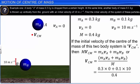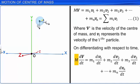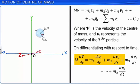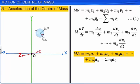On differentiating equation 1 with respect to time, M·(dV/dt) = M1·(dV1/dt) + M2·(dV2/dt) + M3·(dV3/dt) + ... Thus, M·A = M1·A1 + M2·A2 + M3·A3 + ... + MN·AN = Sigma(Mi·Ai). Let this be equation 2, where A is the acceleration of the center of mass and Ai represents the acceleration of the i-th particle.